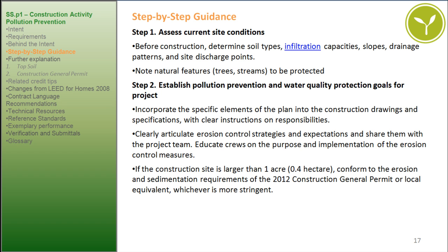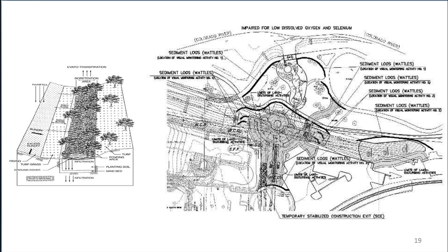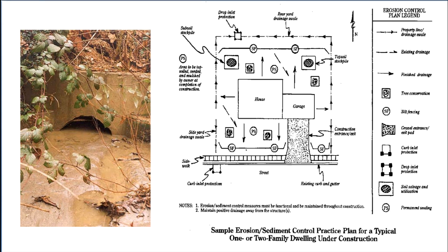Step 2: Establish Pollution Prevention and Water Quality Protection Goals for the Project. Incorporate specific elements of the plan into the construction drawings and specifications with clear instructions on responsibilities. Clearly articulate erosion control strategies and share them with the project team. Educate crews on the purpose and implementation of erosion control measures. If the construction site is larger than 1 acre (0.4 hectare), conform to the erosion and sedimentation requirements of the 2012 Construction General Permit or local equivalent, whichever is more stringent. Sample images show best management practices, infiltration diagrams, sediment lugs, temporary stabilization drawings, and a sample erosion sediment control practice plan for a typical 1- or 2-family dwelling under construction.